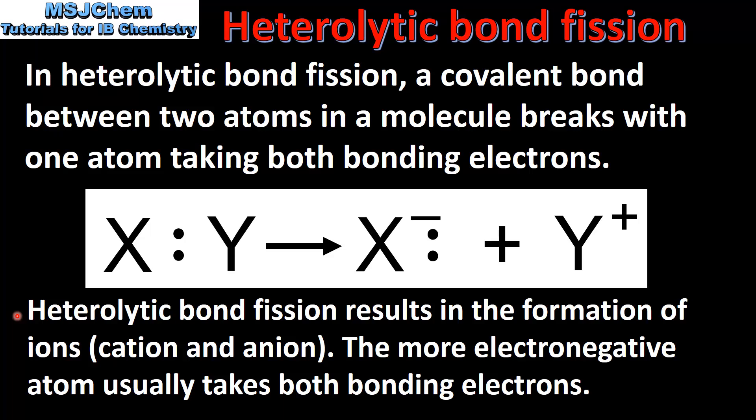This type of bond fission results in the formation of ions. So here we can see that X, being the more electronegative atom, has taken both the bonding electrons and formed a negative ion. Y has formed a positive ion or a cation.